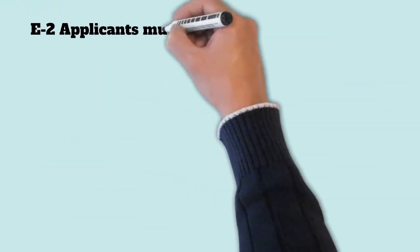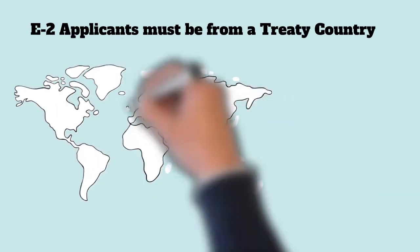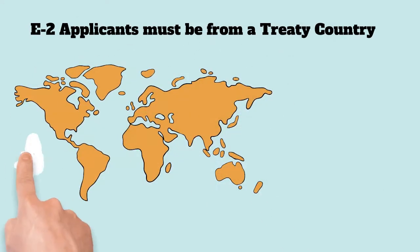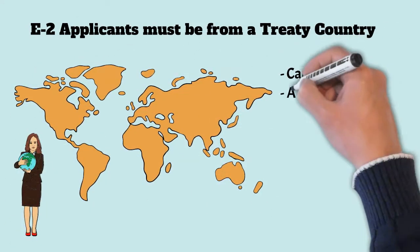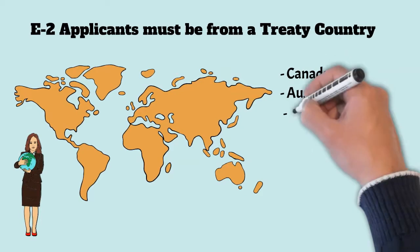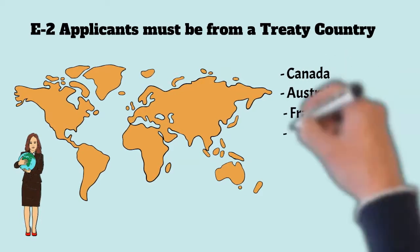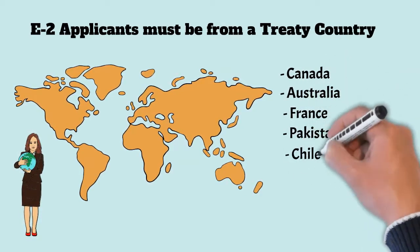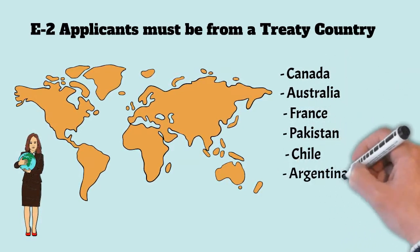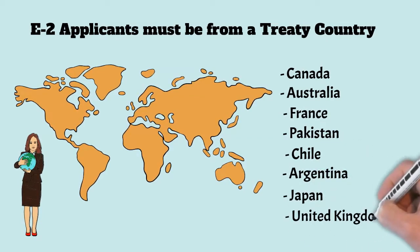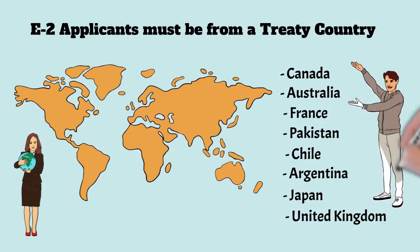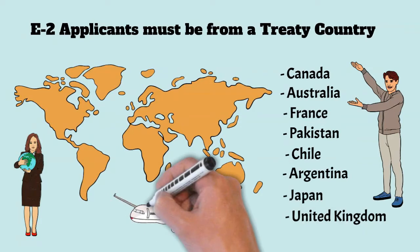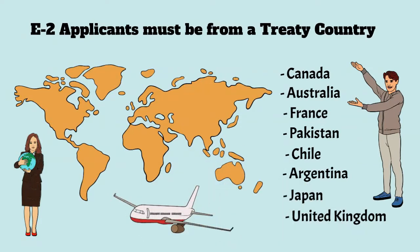One of the fundamental E2 visa requirements is that the applicant must be from a treaty country. There are approximately 80 treaty countries including Canada, Australia, France, Pakistan, Chile, Argentina, Japan, the United Kingdom, and more. To see a full list of E2 treaty countries, take a look at the description below.